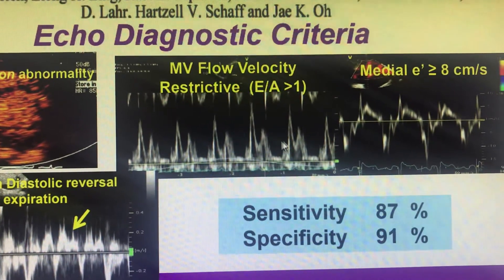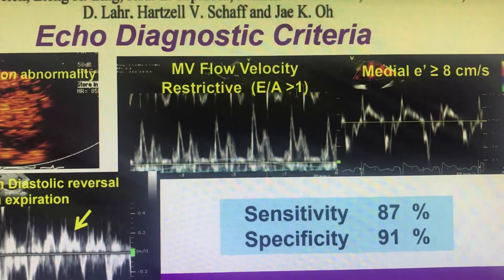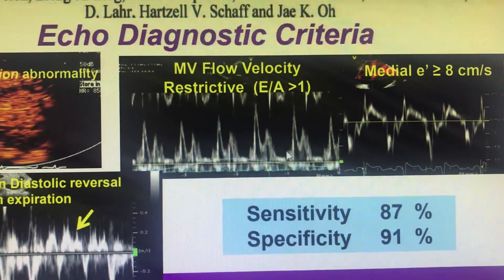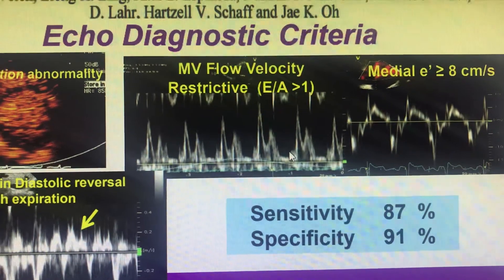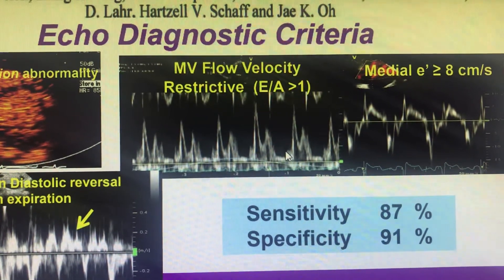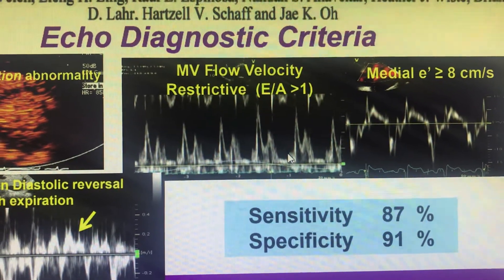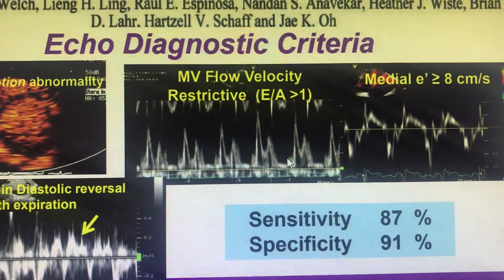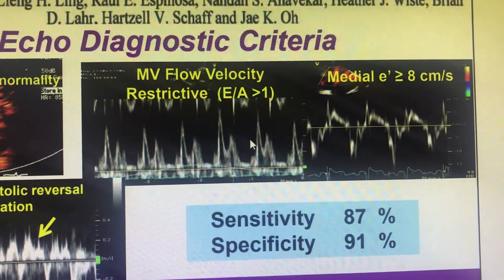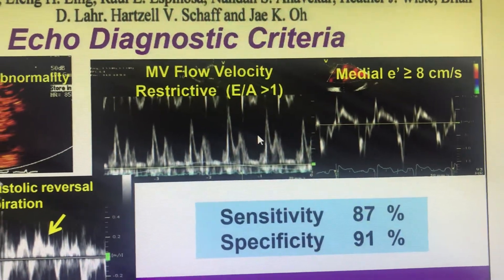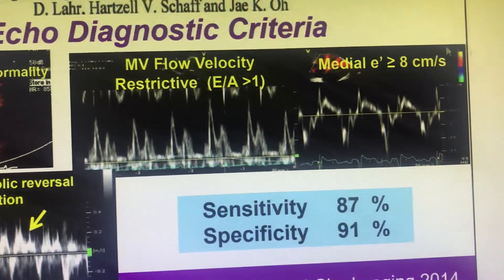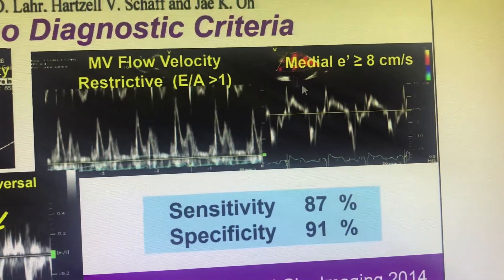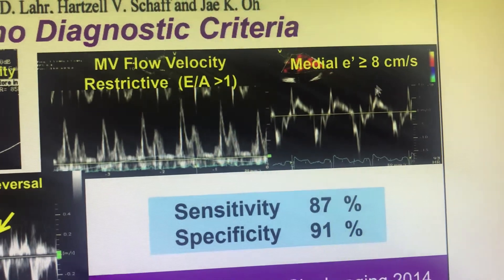Next is the mitral inflow pattern velocity. A restrictive pattern is seen, and an inspiratory variation of the mitral inflow pattern of more than 25% decrease in inspiration across the mitral inflow is confirmatory of constrictive pericarditis.